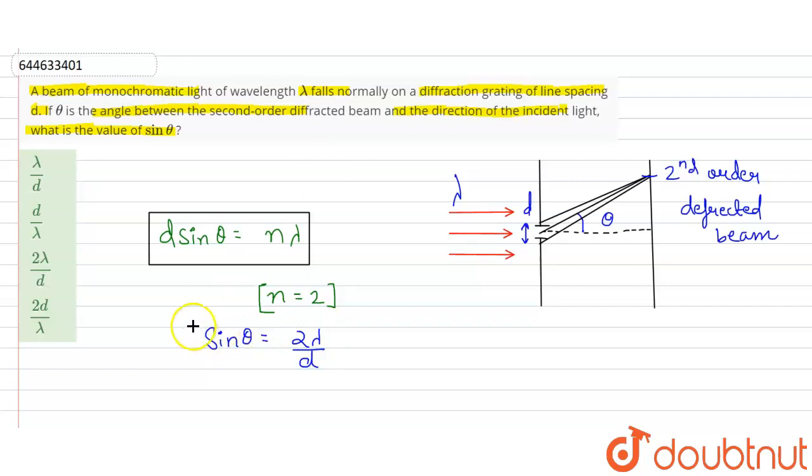This is the value of sin theta for second order diffracted beam. So from here our correct option is option C, 2 lambda by d. Thank you.